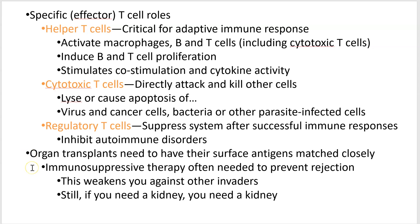Whenever you get an organ transplant, you have to match up the organ or blood with the person that's receiving it, because otherwise your cell-mediated immune system will kill that organ. It will treat that organ just like it's a foreign object, which means you often need immunosuppressive therapy — which is not a walk in the park either. But if you need a kidney, you need a kidney, so you're going to put up with it.